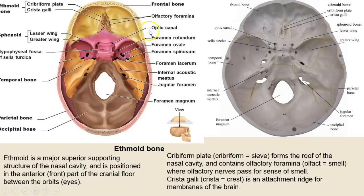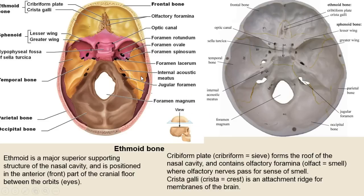The ethmoid is right up here in front. It has a crista galli — the rooster comb — and the cribriform plate with lots of olfactory foramina. When we sniff, this is where the brain picks up odors. 'Cribri' means sieve and 'form' means shape — it's the olfactory foramina. When you see the prefix 'olf-' you think of smell — there are olfactory lobes in the brain. The crista galli is where a membrane is attached to separate the right and left hemispheres of the brain.